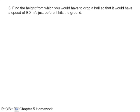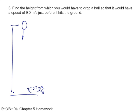Find the height from which you dropped a ball so it has a speed of 9 meters per second before it hits the ground. I drop a ball, it goes down, and when it hits the ground the final speed equals 9 meters per second. I want to know what is this height, h.